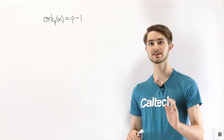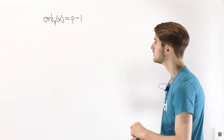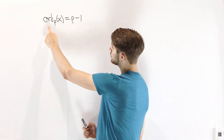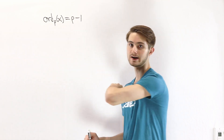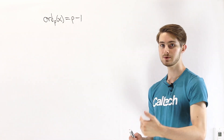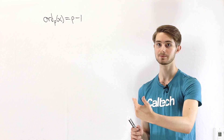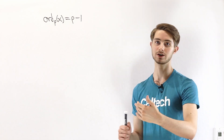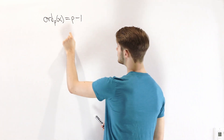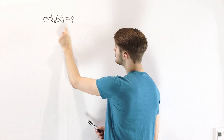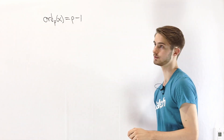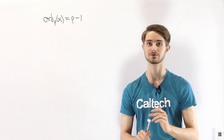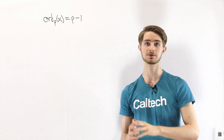Let's start with the definition of a primitive root. A primitive root mod p is some integer x such that the order of x mod p is equal to p minus 1. In fact, p minus 1 is the highest possible order any number can have, because by Fermat's little theorem, x to the p minus 1 is always congruent to 1 mod p. What we want to prove is that every prime p has some primitive root — some number with this property. Our proof is going to be constructive; we're going to show what that primitive root looks like.